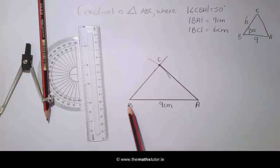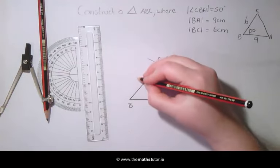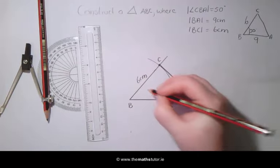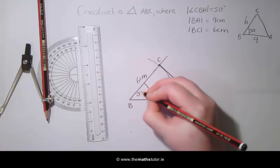And here we have the line BA 9 cm, BC which is 6 cm and our angle at B of 50 degrees.